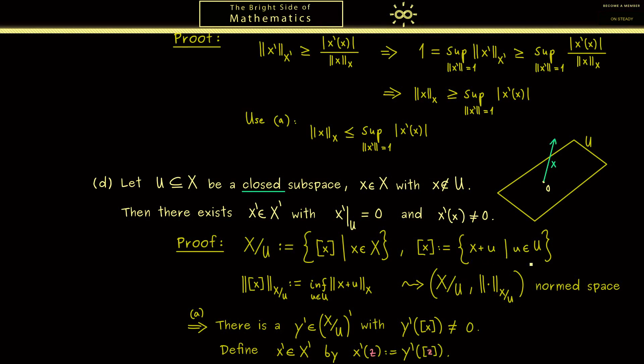This defines a linear functional because the mapping z to the equivalence class of z is also linear. This is not hard to show, you just need the definition of the equivalence class here and maybe I also substitute the x here with z. Of course this should be just any vector in the vector space X. There shouldn't be any confusion with the fixed x we have in the claim here.